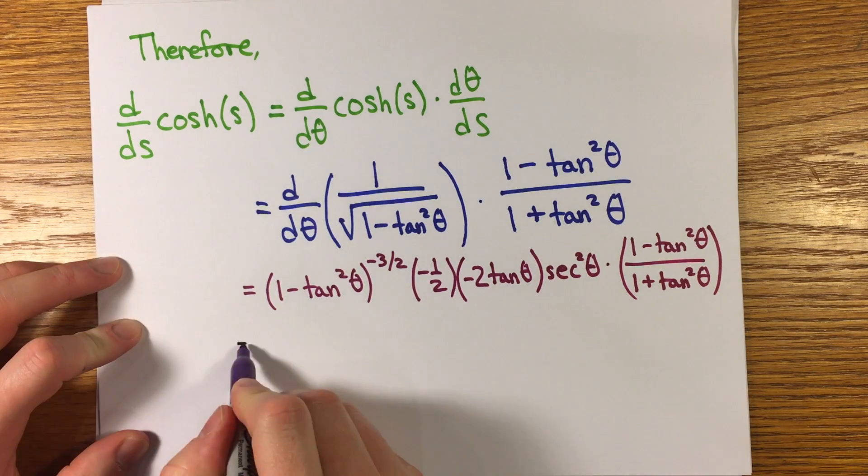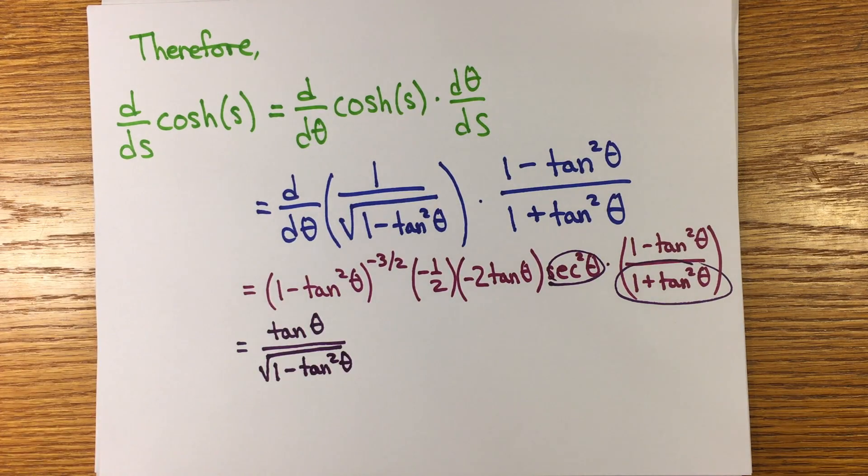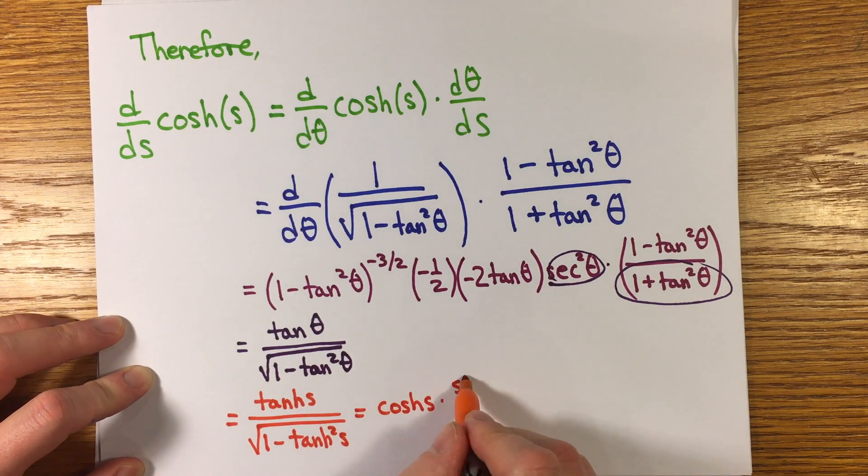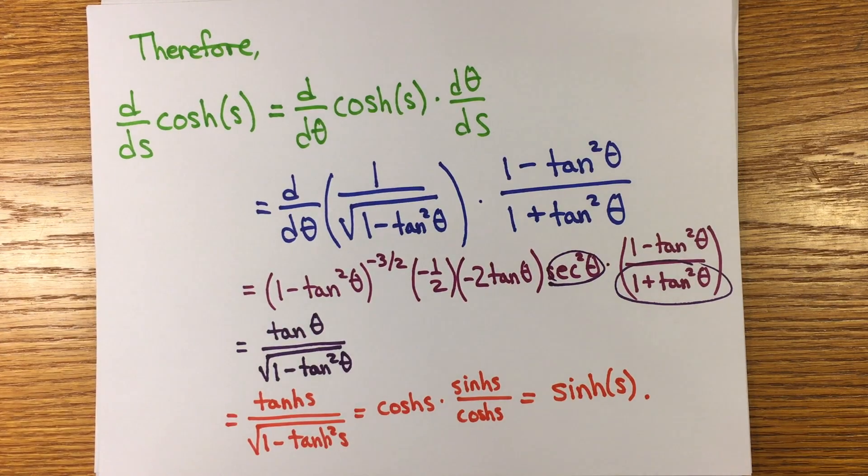This comes to tanh theta over square root one minus tanh squared theta, which is equal to tanh of s divided by square root of one minus tanh squared s equals cosh s times sinh s over cosh s equals sinh s. So the derivative of cosh is sinh.